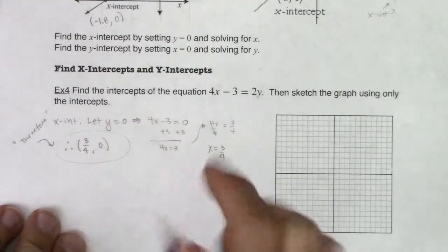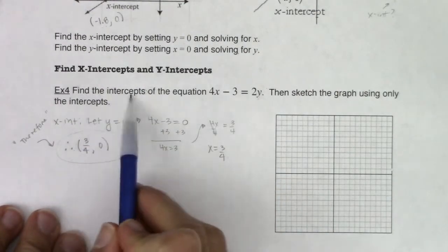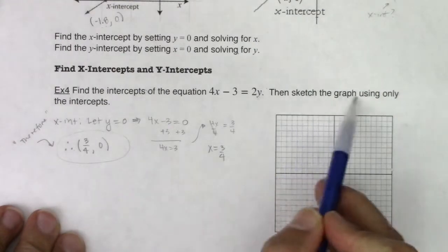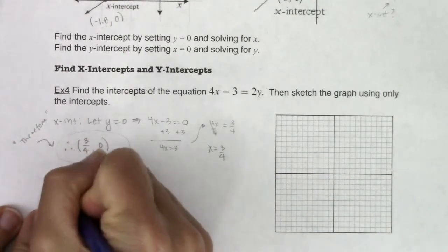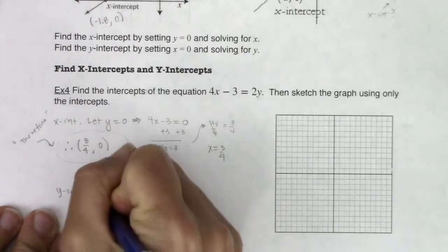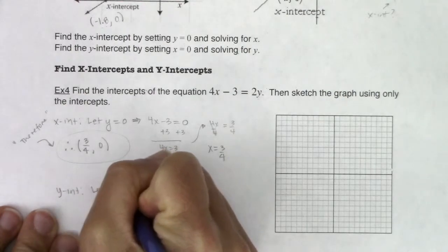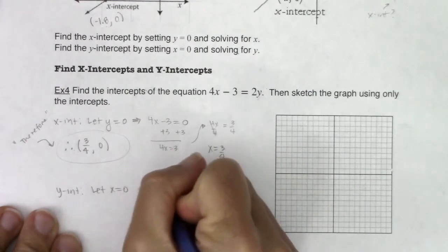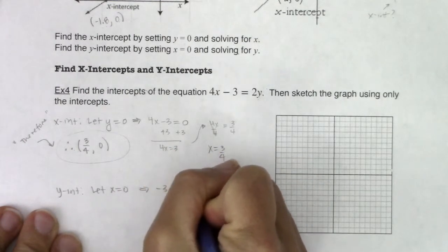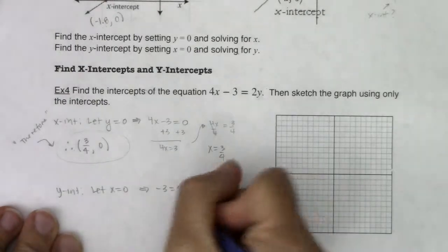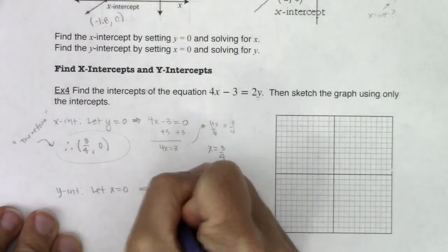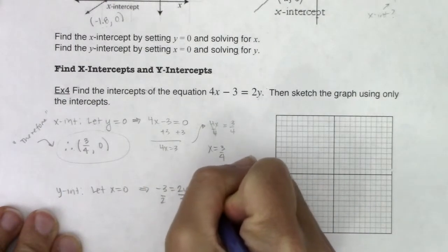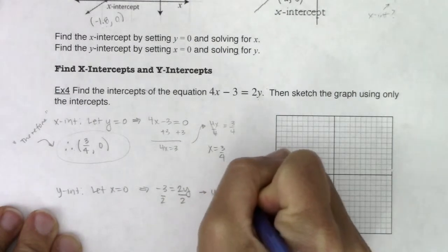We still need to find the y-intercept, because the directions say find the intercepts, both of them, and then we'll sketch. Now to find the y-intercept, I'm going to let x equal 0. So if I let x equal 0 here, this term is going to go away, and I'm going to have negative 3 equaling 2y. Now I'm going to divide both sides by 2, and I think you can see here that I am getting y is equal to negative 3 halves.